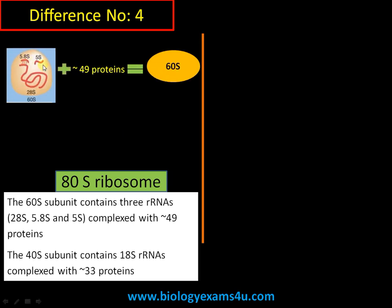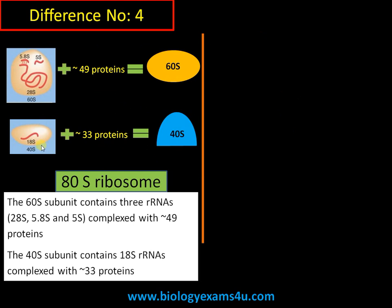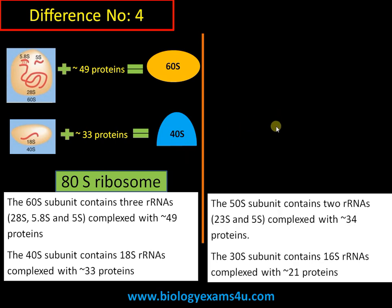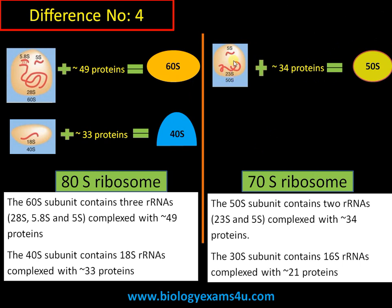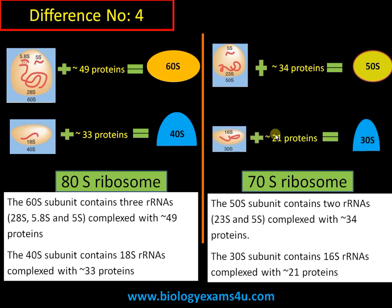Difference number four concerns the rRNA composition of the subunits. The 60S subunit of the 80S ribosome contains 5.8S, 5S, and 28S rRNA, along with approximately 49 proteins. The 40S subunit contains 18S rRNA and approximately 33 proteins. For the 70S ribosome, the 50S subunit contains 23S and 5S rRNA with approximately 34 proteins, while the 30S subunit contains 16S rRNA and 21 proteins.